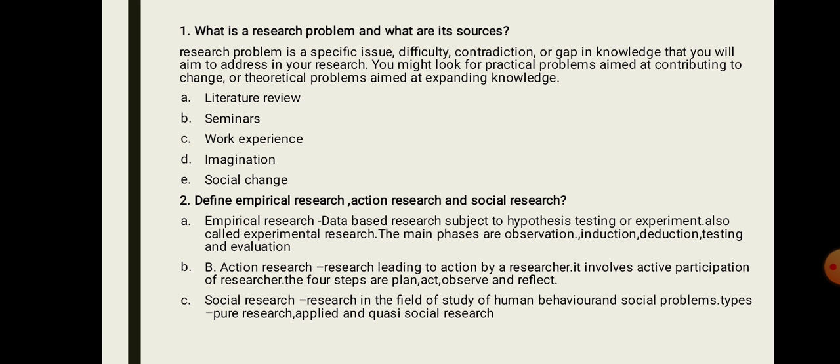What are the major sources of research problems? One source is literature review. There are statements and secondary sources related to literature review, including sources published by government agencies. A literature review can reveal gaps or issues that become a research problem — that is one of the key sources.